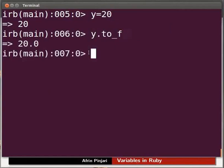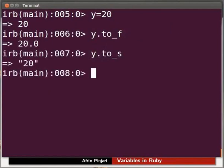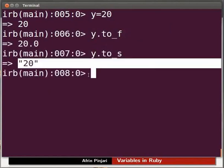Now type y dot to_s and press Enter. We get the output as 20 within double quotes.